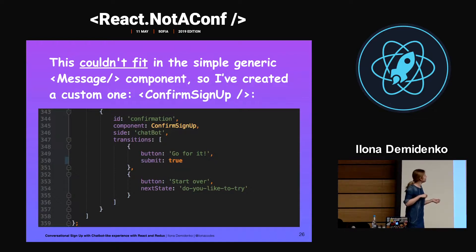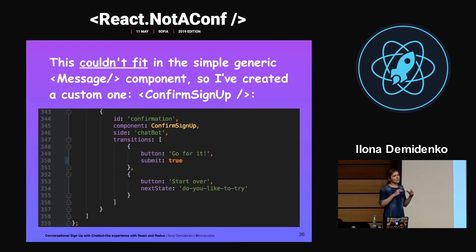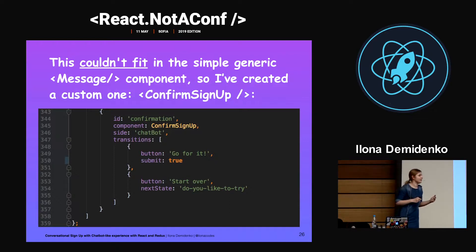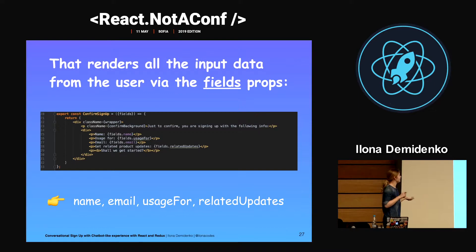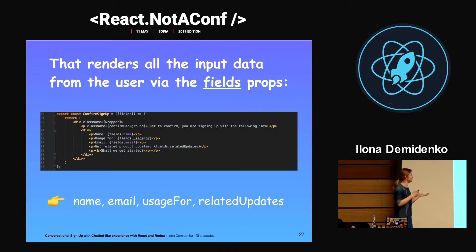To implement the preview step, for the last state I added a new field called 'component', with the value 'ConfirmSignUp'. The message component used before won't fit this case because message component can render only a single line message, and we now need to render all the fields the user has entered. In the ConfirmSignUp component, the props include the fields object, which contains the user's name, the purpose of why the user wanted to sign up, their email, and information about whether they'd like to subscribe to the newsletter.